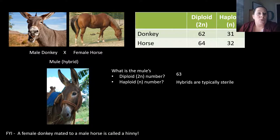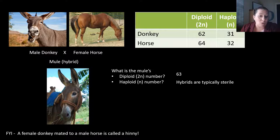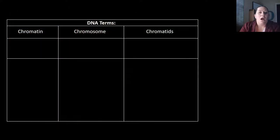When a male donkey and a female horse are mated, the result is what we call a mule. However, if it's a female donkey mated with a male horse, it is actually called a henny.